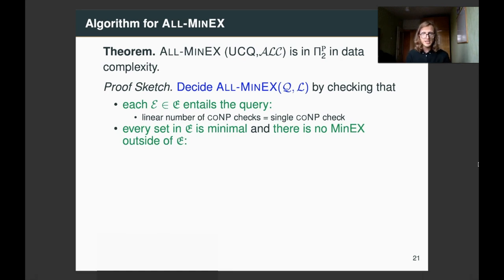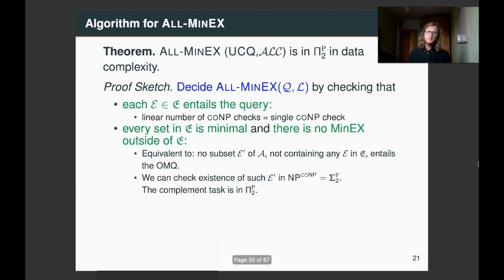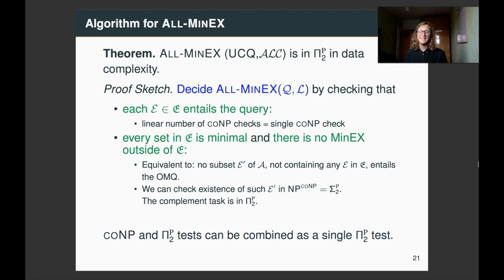So, we can check entailment with linear number of co-NP checks, and we notice that the other two tasks are equivalent to ensuring that there is no subset E dashed of the A-box that does not contain any subset in our set that entails the ontology-mediated query. So, in our A-box, we have our subsets, and E dashed might be a subset of one of our subsets, and as it doesn't entail the query, we know that each of our subsets is actually, indeed, minimal, and the other option is E dashed contains some elements outside of our subsets, because it cannot contain any of them, and this ensures that there is no minex outside of our set of subsets. And the task of checking existence of such E dashed is in Σ2P, and we are interested in the complement task, which is in Π2P. And indeed, co-NP and Π2P tests can be combined as a single Π2P test.